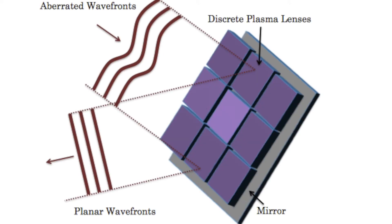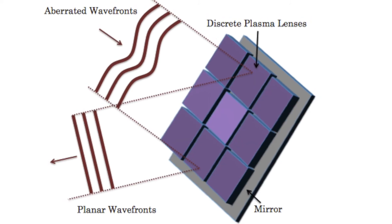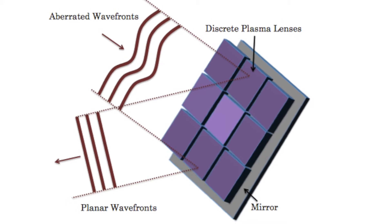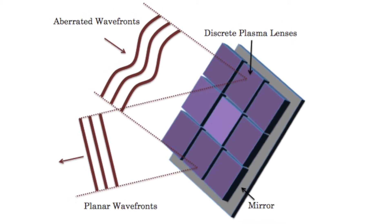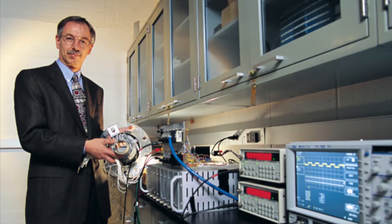Now you take one of those tubes and arrange them into a whole group — a matrix of tubes. The light comes in and we can control the index of refraction of any of them independently, so we can distort light as it goes through.